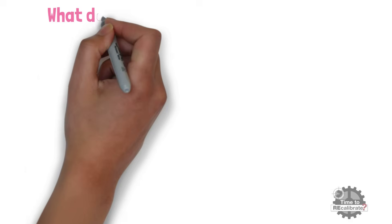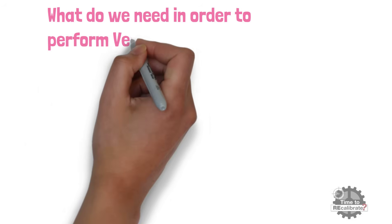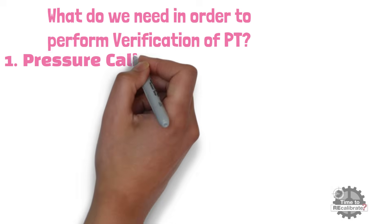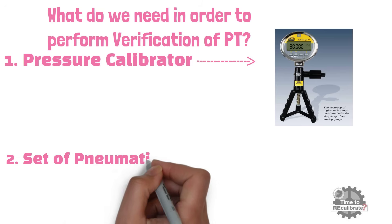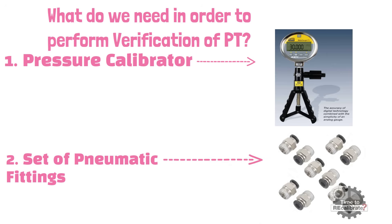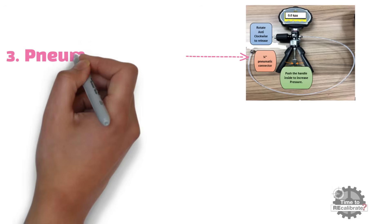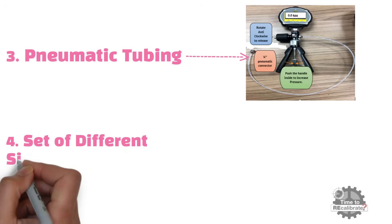What do we need in order to perform verification of a pressure transmitter? First of all, we need a pressure calibrator. Secondly, we need a set of pneumatic fittings. Thirdly, we need pneumatic tubing. Last but not least, we also need a set of different size wrenches.